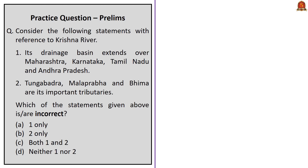This prelims question is on Krishna River. The first statement mentions its drainage basin extends over Maharashtra, Karnataka, Tamil Nadu, and Andhra Pradesh. This statement is incorrect — during discussion we saw the basin extends over Maharashtra, Karnataka, Andhra Pradesh, and Telangana; Tamil Nadu should not be present. So Statement 1 is incorrect. The second statement mentions Tungabhadra, Malaprabha, and Bhima are its important tributaries — this is correct. Tungabhadra and Malaprabha are important right bank tributaries, and Bhima is an important left bank tributary. Since the question asks for incorrect statements, and only Statement 1 is incorrect, the correct answer is Option A — one only.